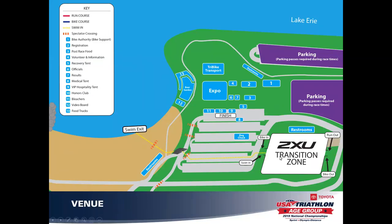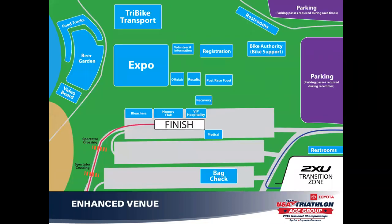Briefly outlining the venue: the transition zone is located centrally. Athletes exiting the swim will come under a flyover, and the parking lot area will be carpeted prior to entering transition. On the east and northeast side is parking for those with pre-purchased passes. The race registration tent, bike support hub, volunteer information, expo, officials tent, results tent, post-race food tent, recovery tent, medical, VIP and hospitality, Honors Club, bleachers and video board, and beer garden are all mapped within the venue.